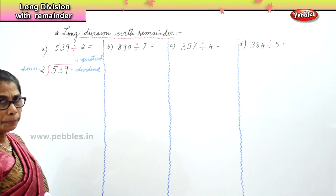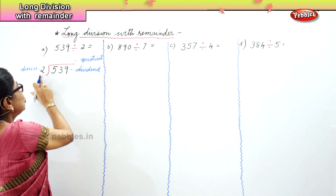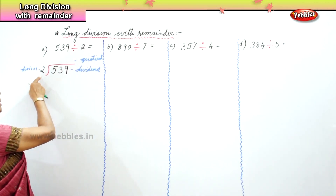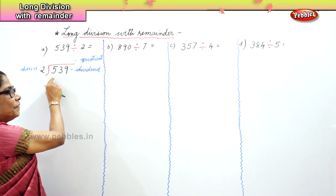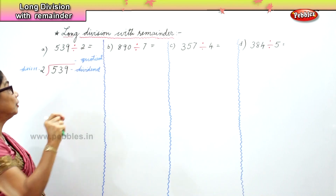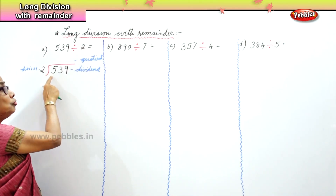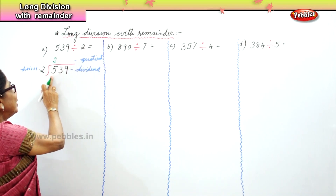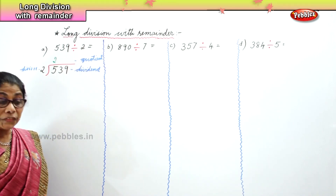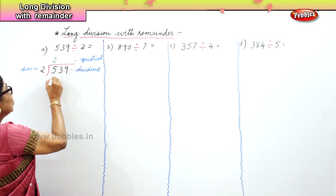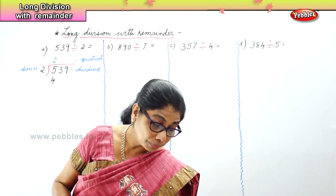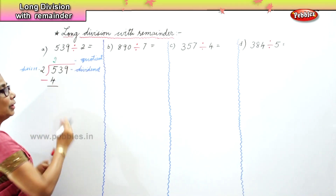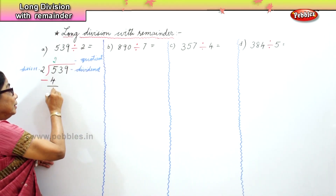Let's begin. Take one number at a time. The divisor must see how many times it goes into the first number. Two goes into 5 two times — two 2s are 4 — so we write minus 4.